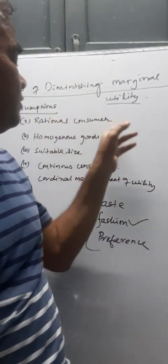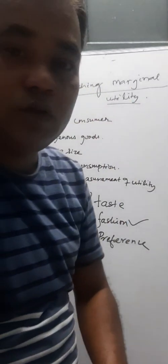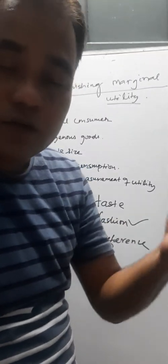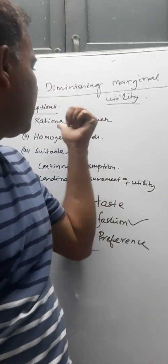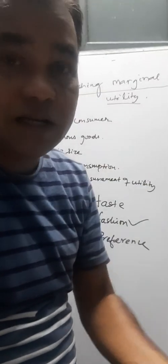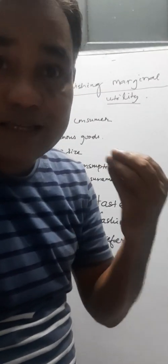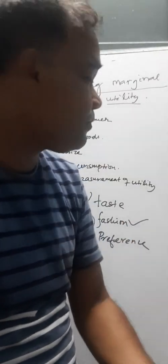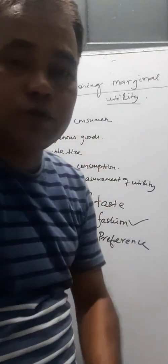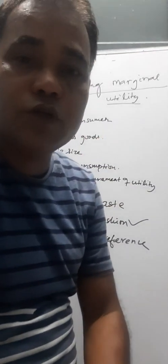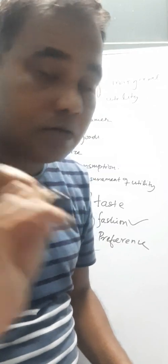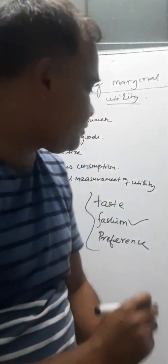His mental condition, his taste and preference should remain constant. The second assumption is homogeneous good. Homogeneous means uniform — uniform means the goods are of the same type.